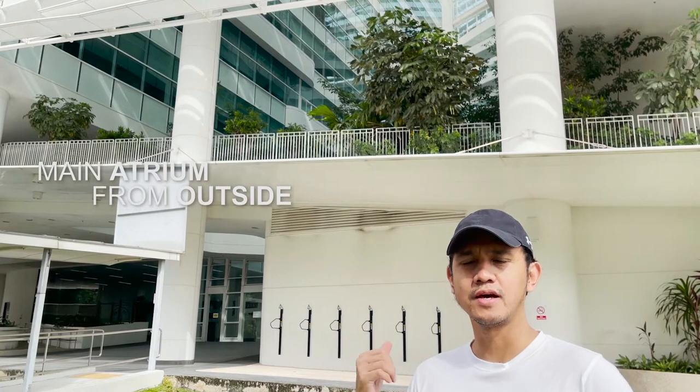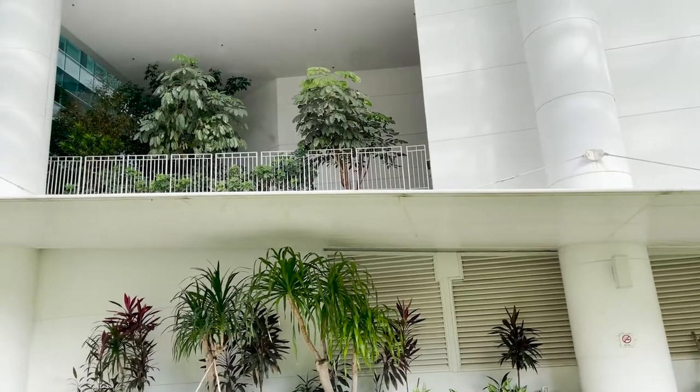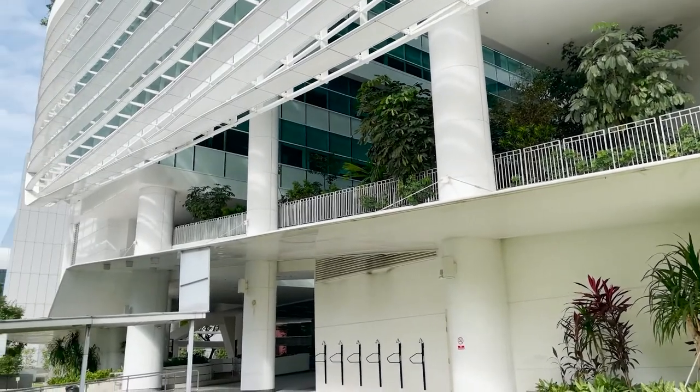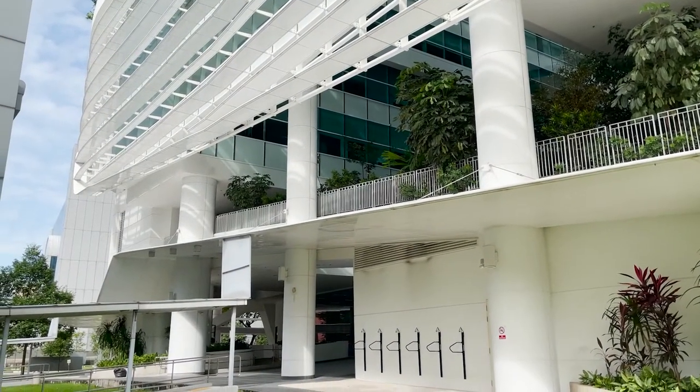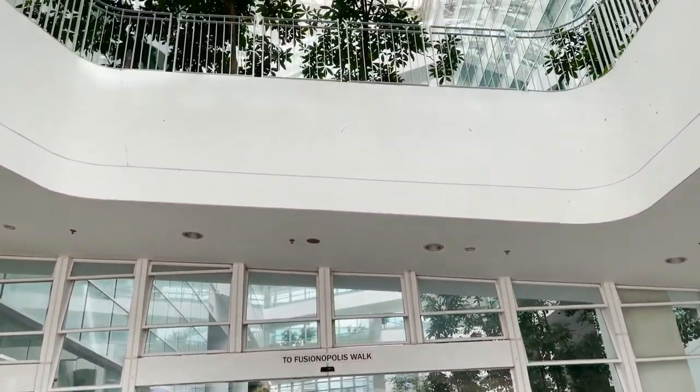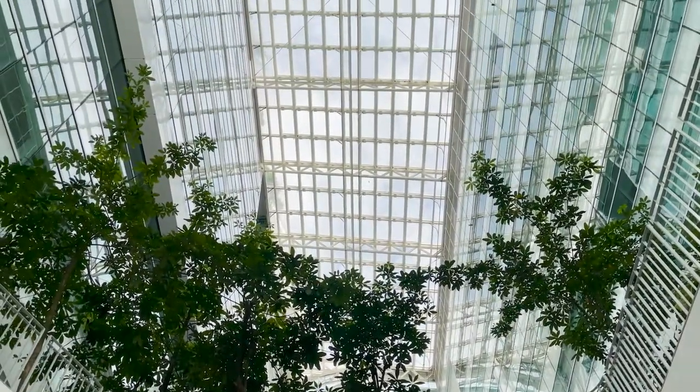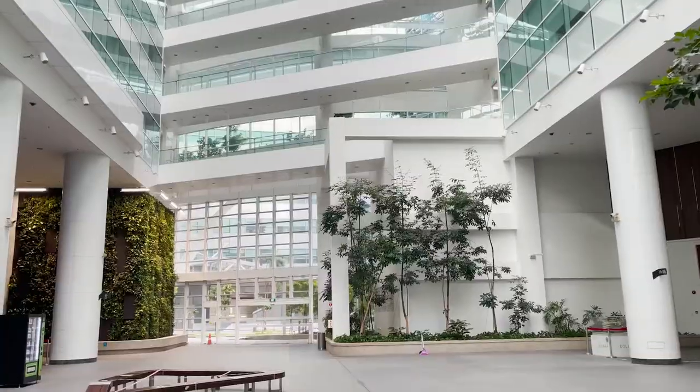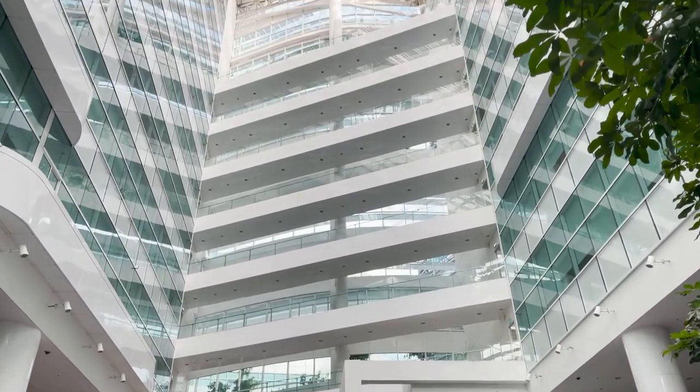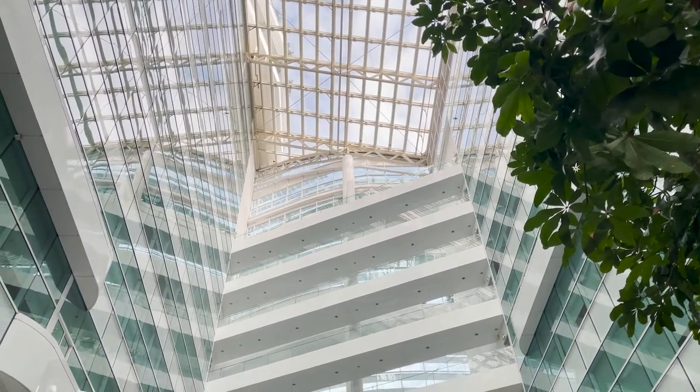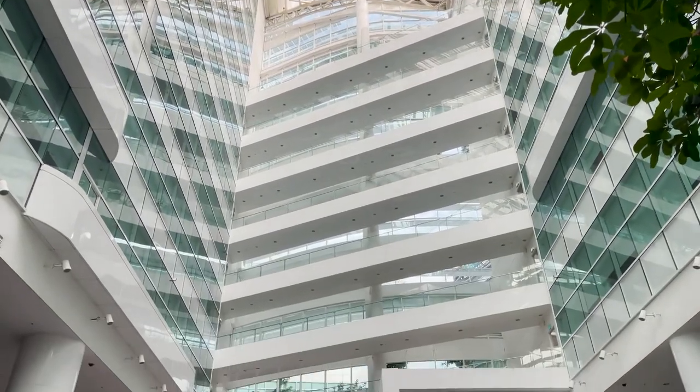Here we are now at the outside of Solaris building, but even though we are outside we can still see partially the main atrium. The design really considered openness. The main atrium can be seen from the outside, not like the usual buildings that the main atrium is blocked by glass and concrete walls. The main atrium is very visible from the outside of the building.